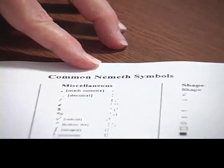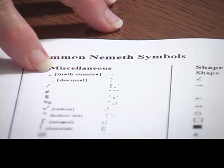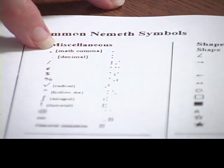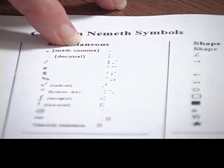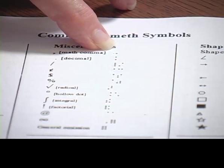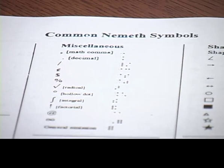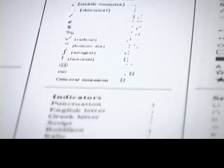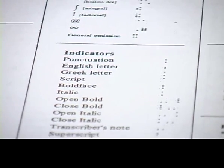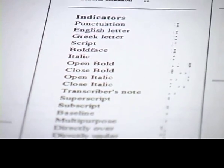It's called Common Nemeth Symbols, and what we're looking at right now are miscellaneous symbols. It basically has — in this case, comma — telling you it's the math comma, and then showing you the Symbraille, which is dot six. Very minimal information. And then we've got some other indicators: punctuation, English letter, Greek letter, and so forth.